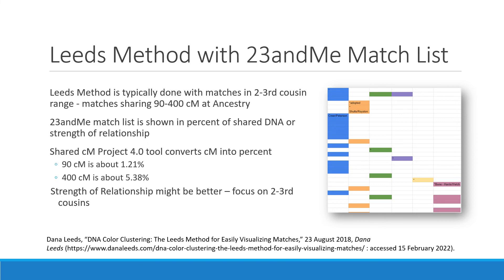If you do have pedigree collapse, you might want to focus on strength of relationship instead of percent. If you're getting a lot of X chromosome matches that are actually more distant than third cousins, you might want to focus on just the second to third cousin predicted relationship and gather all those second and third cousins. In 23andMe you'll have a lot of predicted third cousins, so that might be too many for your leads method — consider going down to about 1.1% depending on how much time you have.